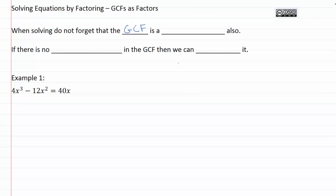GCF, our greatest common factor that we pull out, that's also a factor, so we need to set that equal to zero. If there is no variable in the GCF, then we can ignore it. It's not really going to help us to solve for x if there's no x in the GCF.